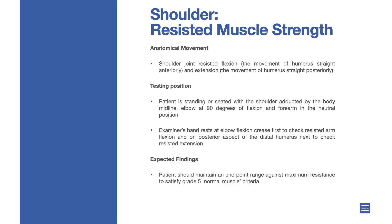Anatomical movement — shoulder joint resisted flexion: the movement of the humerus straight anteriorly; and extension: the movement of the humerus straight posteriorly.